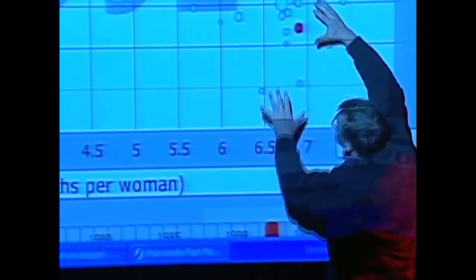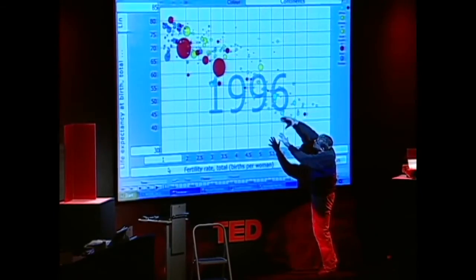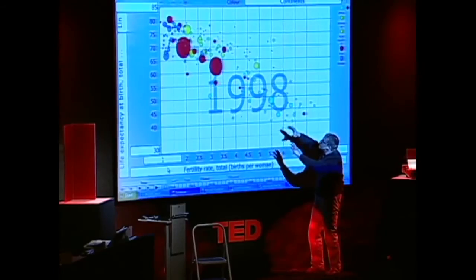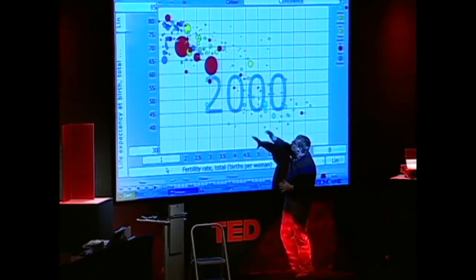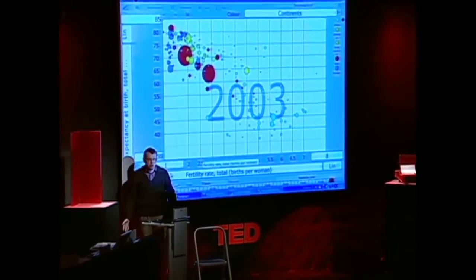The imams start to promote family planning, and they move up into that corner, and in 90s, we have the terrible HIV epidemic that takes down the life expectancy of the African countries, and all the rest of the world moves up into the corner where we have long lives and small family, and we have a completely new world.